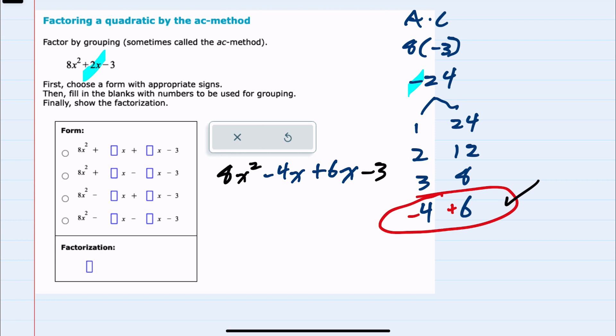Before doing so though, I would recognize that is this form, 8x squared minus 4x plus 6x, and now to factor by grouping.